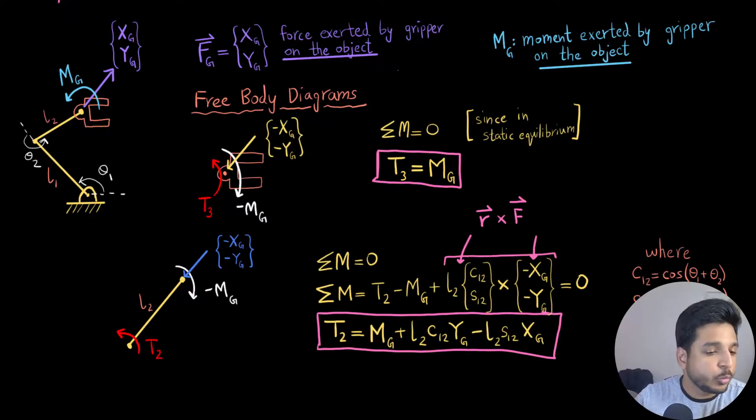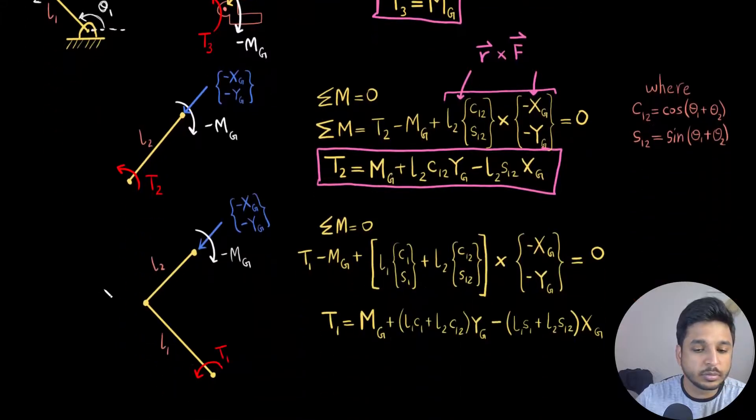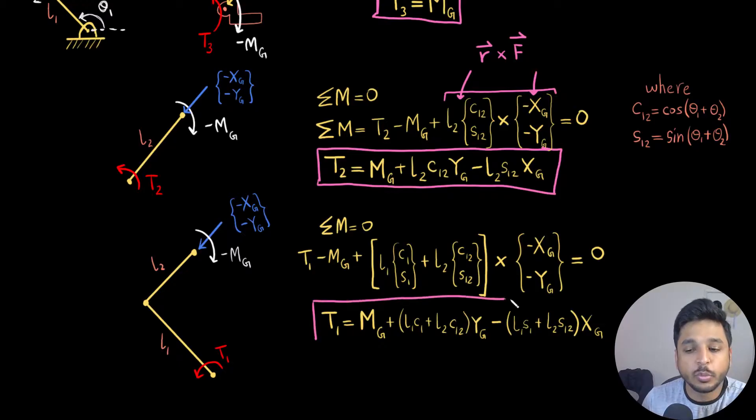And now moving forward. So I have drawn the free body diagram. In this case, I have combined the link one and link two, marked out the moment and the forces acting on these things. And I have written T1 as the torque exerted by the first motor. So I've written summation of moment equal to zero. So this is how it goes. And finally, I get this equation T1 equals to this.